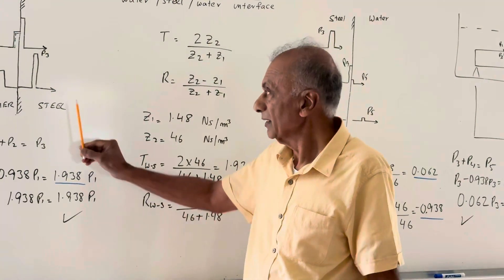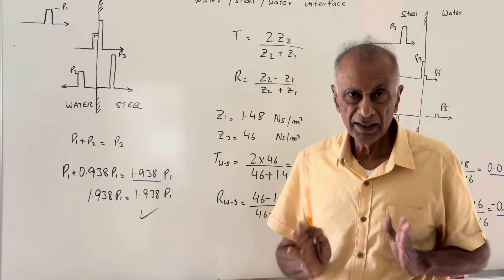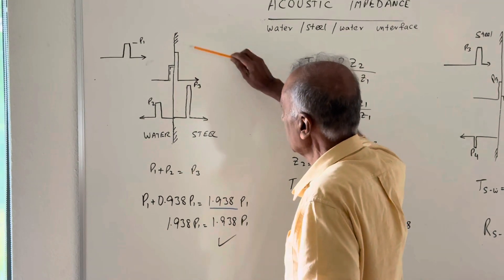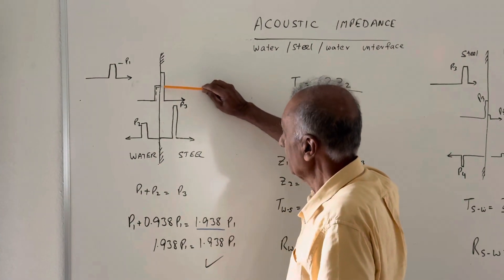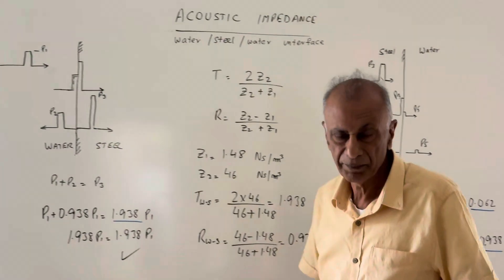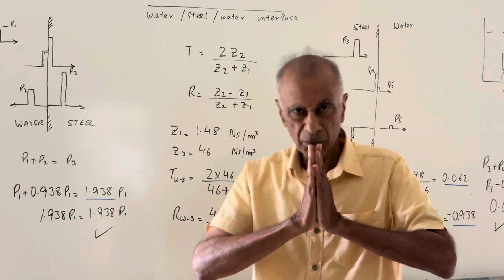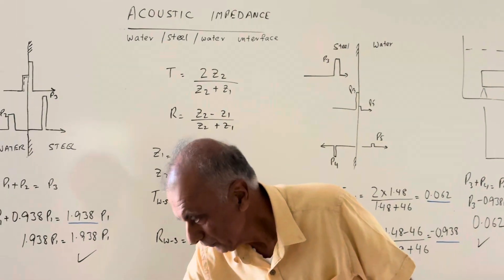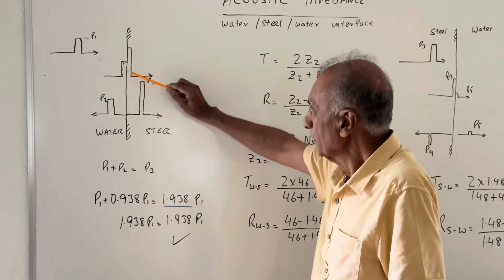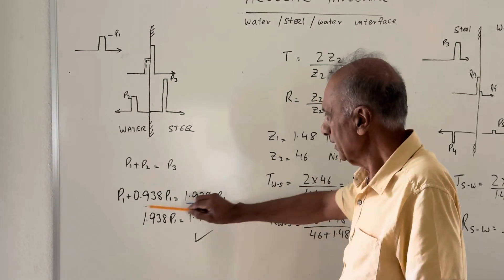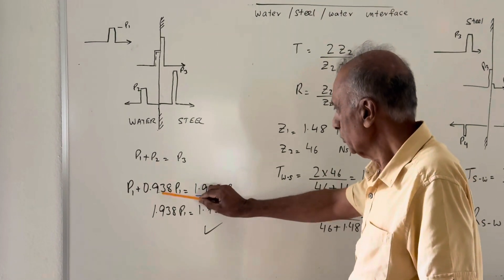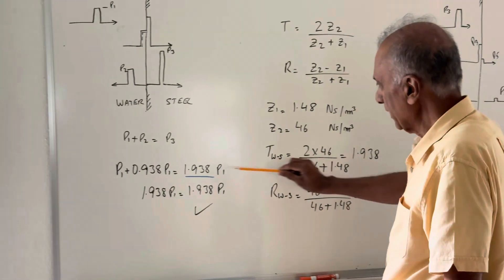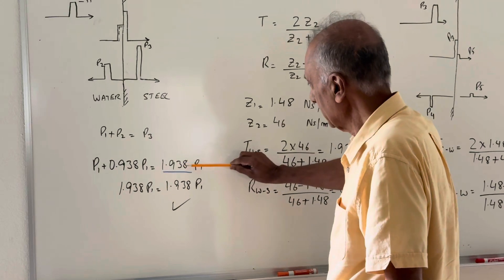Upon reflection and transmission, the boundary conditions have to match, which means the pressure on this side has to equal the pressure on the other side — P1 plus P2 has to equal P3. So P1 plus P2 equals P3. P2 is the reflected signal, which works out to 0.938 P1, and the transmitted pulse pressure is going to be 1.938 P1.